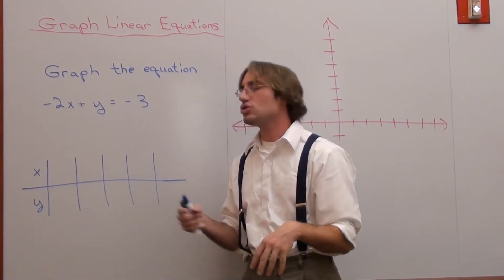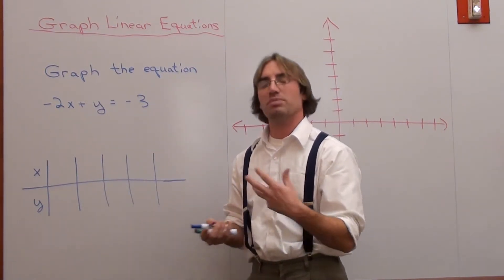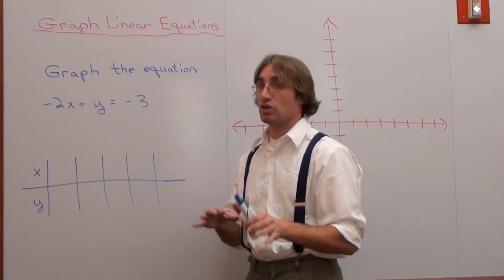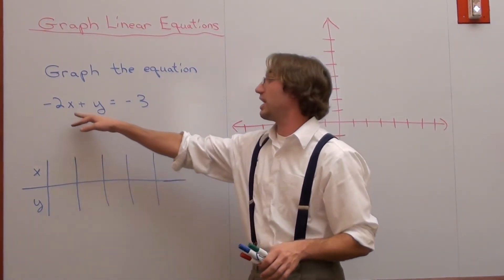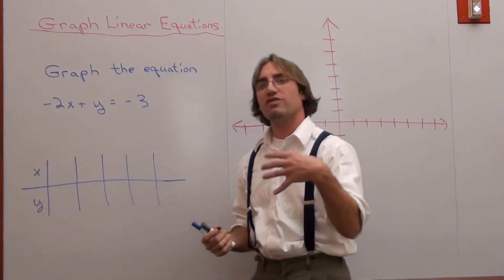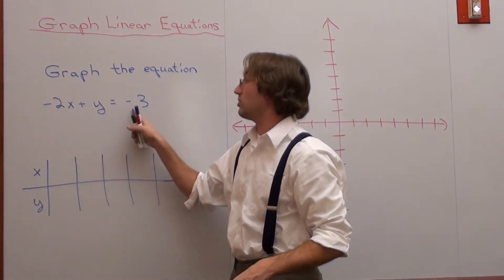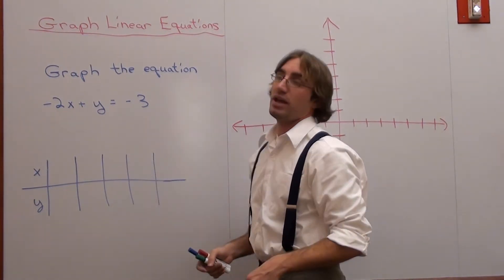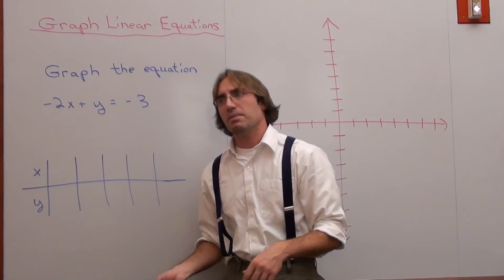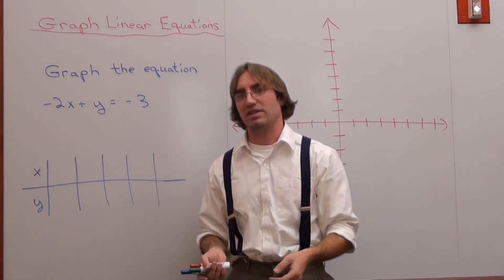If you want to find any solution that works for this answer, that's what a picture does. Here's the example: negative 2x plus y equals negative 3. I want to figure out an x value and a y value that will actually make this equal negative 3. And the answer is that there's an infinite amount of answers — but it's a selective infinite amount of answers that work.